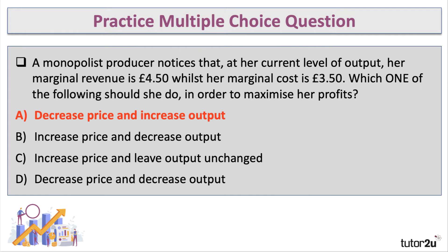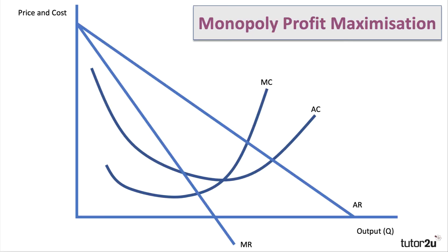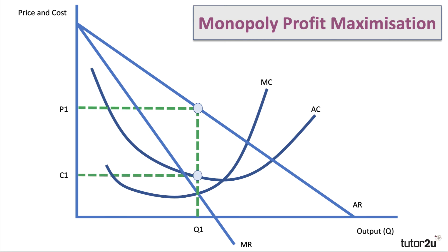How do we show monopoly price and output using a cost and revenue diagram? A monopoly is a highly concentrated market with a downward sloping demand curve and a marginal revenue curve which lies below average revenue. The monopolist is a price setter — they control enough market supply to influence price. For a pure monopolist, the average revenue curve is also the market demand curve. Assuming a profit maximizing single-price monopoly, the firm chooses output Q1 where marginal revenue equals marginal cost, then charges price P1. Since price is above average cost, the monopolist earns supernormal profits — also known as abnormal or monopoly profit.